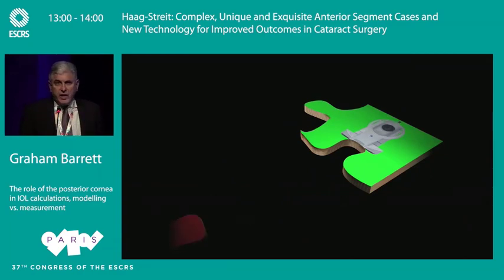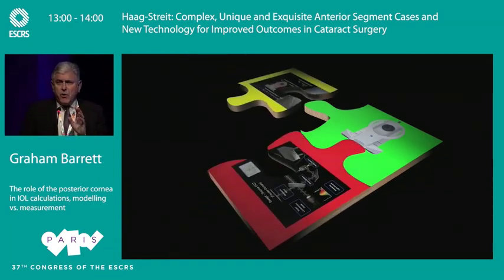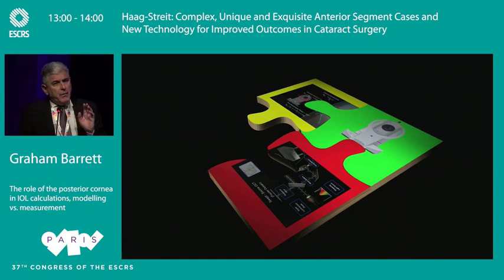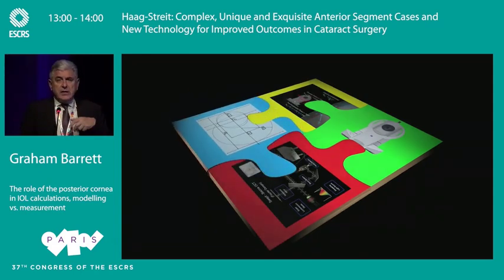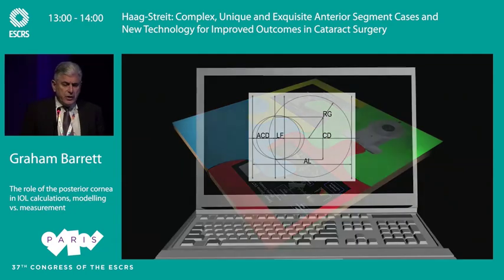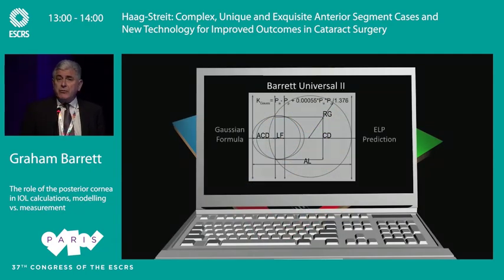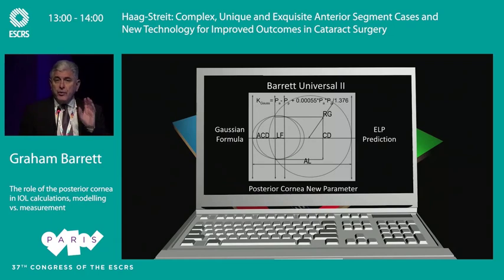Having new devices and new biometers is part of the puzzle. But most evidence suggests that so far, using direct measurements of the posterior cornea has been somewhat disappointing. The reason, I believe, is that what's been missing is the best way to use this information within formulae. My own formula, the Barrett Universal 2, is a paraxial ray tracing Gaussian thick lens formula, and it's well suited to using this new parameter — the posterior cornea.